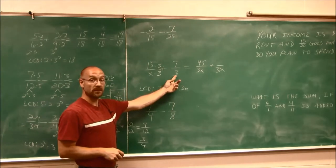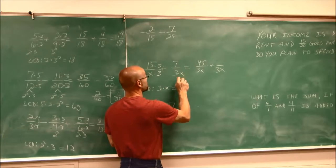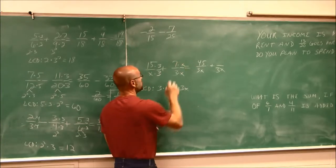3 times 15 is 45. Now, to make this 3 a 3x, I have to give it an x, a factor of x. What I do to the bottom, I do to the top.